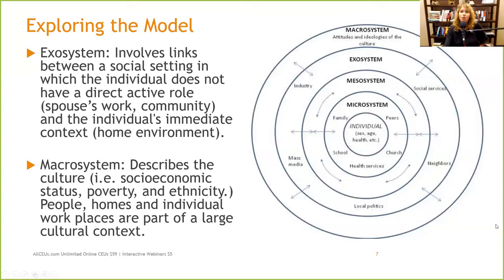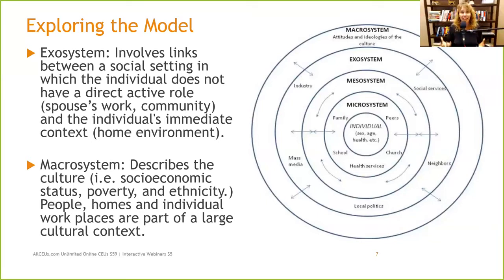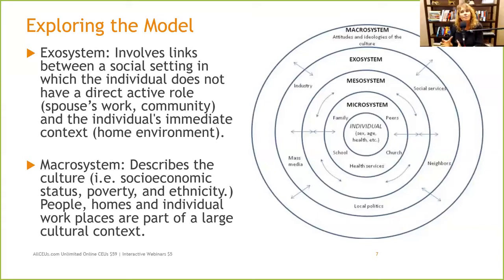The macrosystem describes the culture, socioeconomic status, poverty, ethnicity, etc. What we're looking at in the macrosystem is really larger — not just within your city or even your neighborhood. We're looking at what you see in the media, what you see on national TV, your statewide and national elections, your state laws and culture. If you are a religious person, what your religious culture communicates. So what types of things does that communicate to the person and how does that influence the development of depression, anxiety, or addiction?